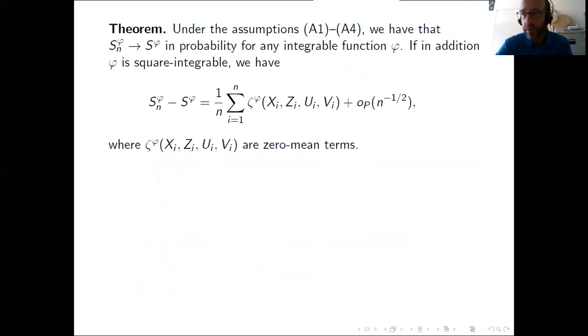So this is one of the main theorems in our paper under several assumptions I will discuss in a minute. We have that the Efron-Petrosian integral with covariates is weakly consistent for any integrable function phi and if in addition phi is square integrable we have an asymptotic representation for the estimator as a sum of zero mean iid terms plus a negligible remainder. And from this result of course we can easily obtain distributional convergence for example which is needed for the construction of confidence intervals and so on and so this is a very important result in practice.